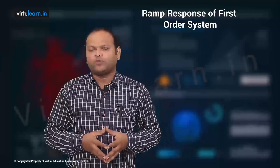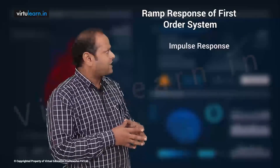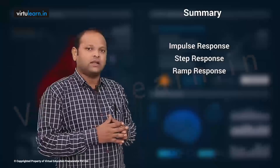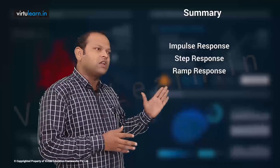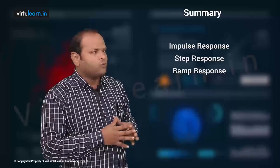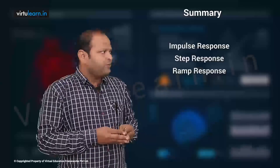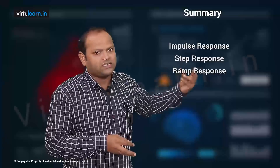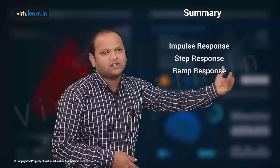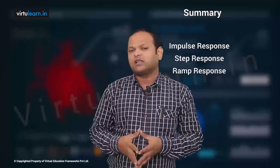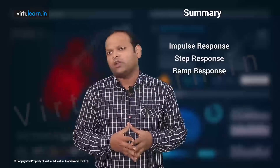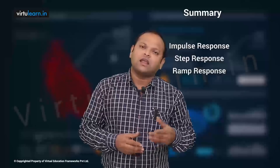To summarize these three responses: the first is impulse — we have only transient, there is no steady state. The second is step response — we have both transient and steady state. The third is ramp — we also have steady state and transient, but the transient is very very small and most of the response is confined to steady state. For even higher-order inputs like parabolic, the transient part will be negligible and we will have almost only steady state, hence parabolic input is used for steady state error analysis.